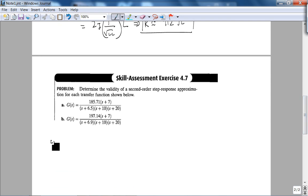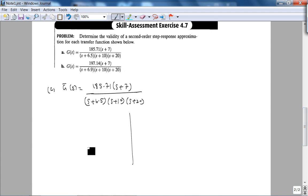So here it's asking, determine the validity of a second order step response approximation for each of the transfer functions below. And if you look at part A, basically our transfer function, G of S, is some constant times a finite zero at negative seven, divided by a third order polynomial. So if you look at the pole zero map of this, you basically have real part, imaginary part. You have a zero at negative seven, and then you have a pole at negative 10 and another pole at negative 20.